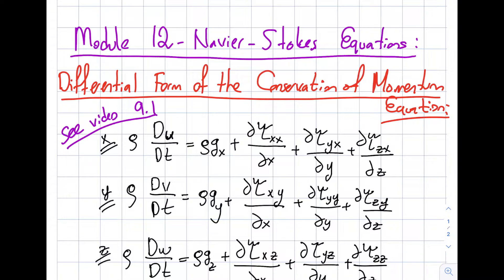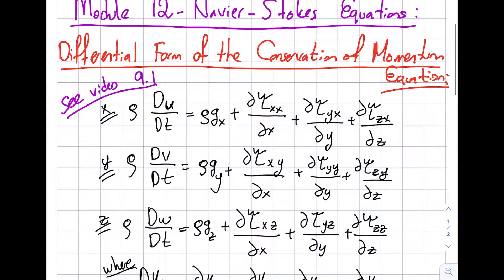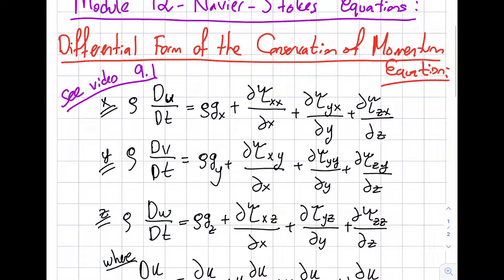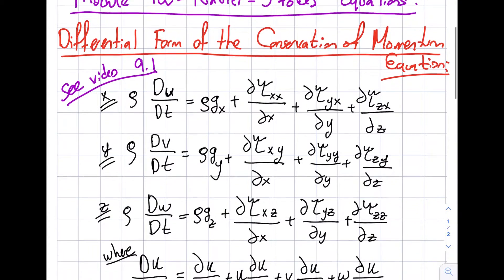The first thing I would like you to do is visit Video 9.1 — it's a 20-minute video. In that video I derived the differential form of the conservation of momentum equation and came up with three sets of equations. Some people also call this the general differential equation of motion, because it's still F equals ma — this part is force divided by volume, and this part is ma divided by volume.